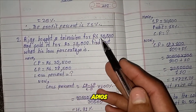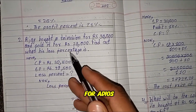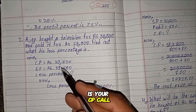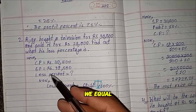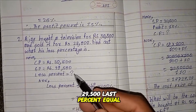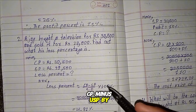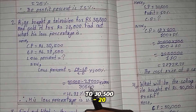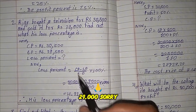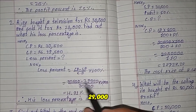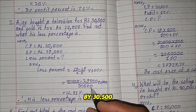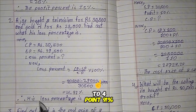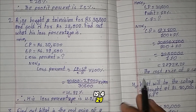Question 2: A person bought a television for RS 30,500 and sold it for RS 29,000. Find the loss percent. Here, CP equals RS 30,500, SP equals RS 29,000. Loss percent equals CP minus SP divided by CP multiplied by 100 percent equals 30,500 minus 29,000 divided by 30,500 multiplied by 100 percent equals 4.91 percent. Therefore, the loss percent is 4.91 percent.